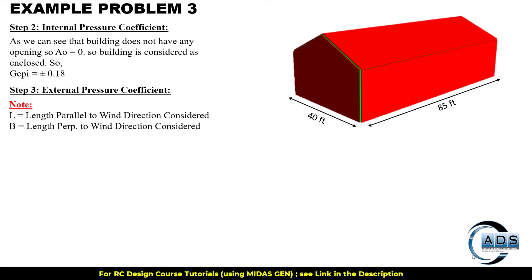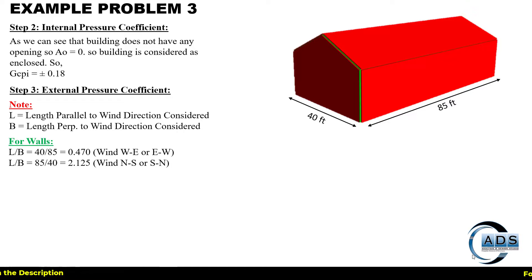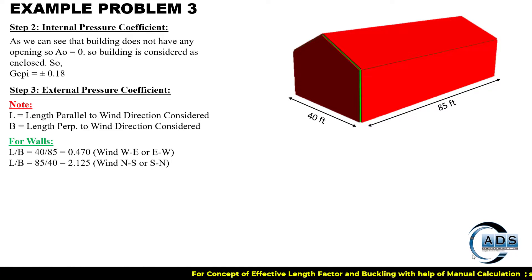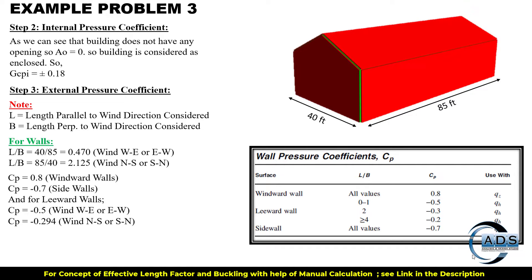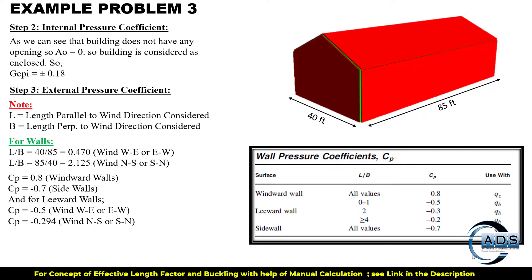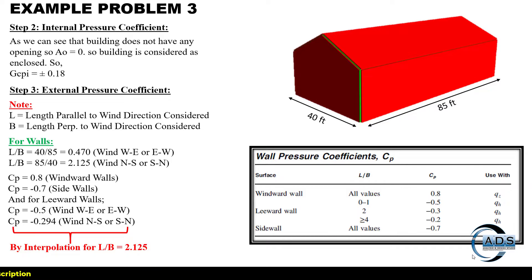Step 3 is to find out the external pressure coefficient. Note that the length is parallel to the wind direction. The length-over-breadth ratios for both wind directions are mentioned. Using the relevant table, we are getting these Cp values. The last value will be found using the interpolation technique against L over B of 2.125.